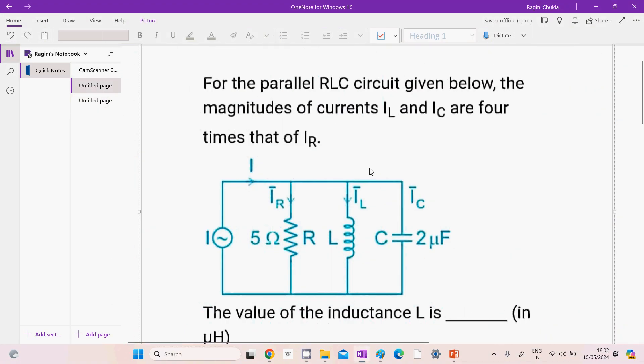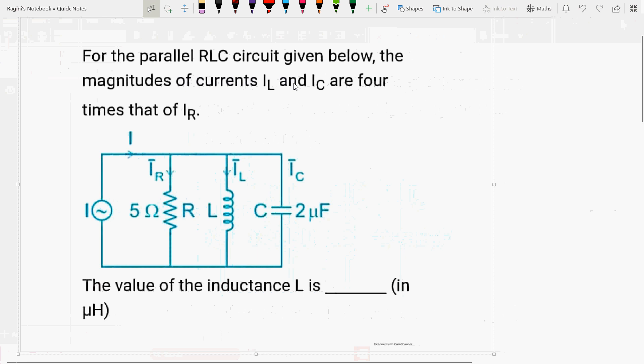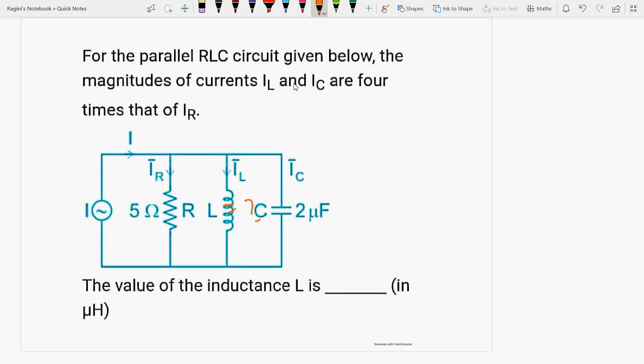Next question is, for a parallel RLC circuit given below, the magnitudes of currents IL and IC are 4 times of IR. What is given? How much is the L-C value? We have to find this value. Magnitude of IL equals magnitude of IC equals 4 times of IR.